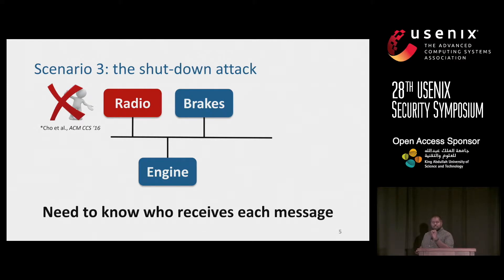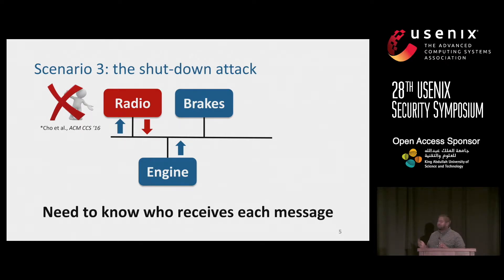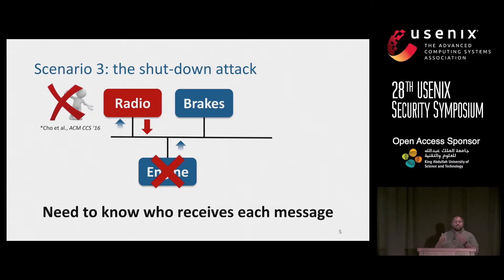And maybe this guy from Craigslist wanted to use that radio to shut down my engine ECU. Using recent work by Cho et al., they showed that a compromised ECU capable of receiving messages from its victim — in this case the engine ECU — could shut it down by simply sending messages in a particular manner, causing errors in the engine's transmission, and it will shut down. So in this case, we would also want to know what messages an ECU can receive.